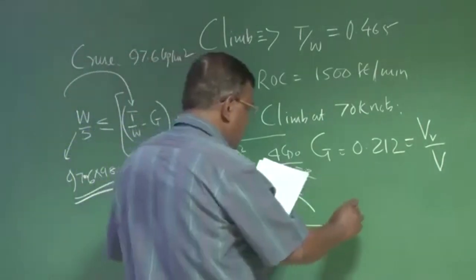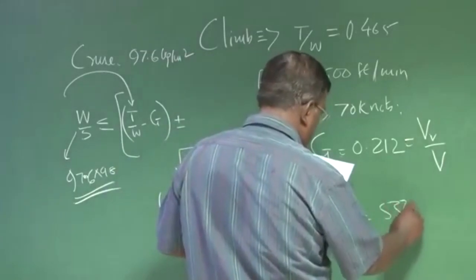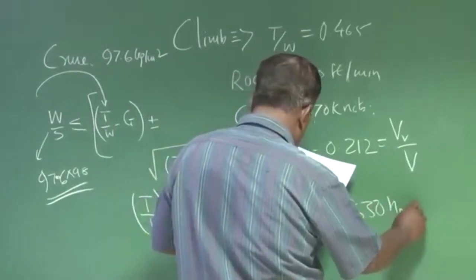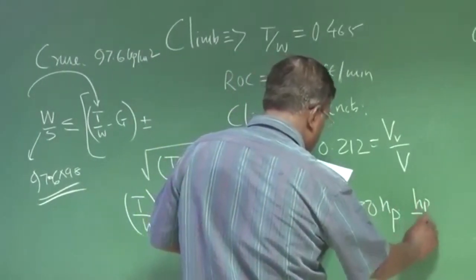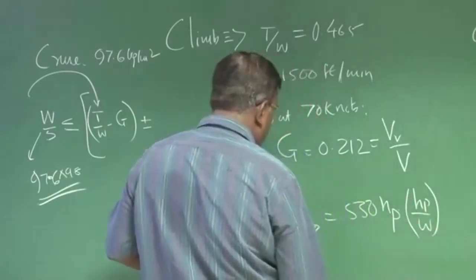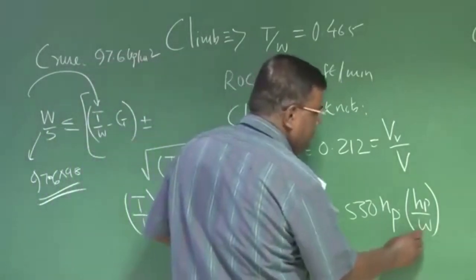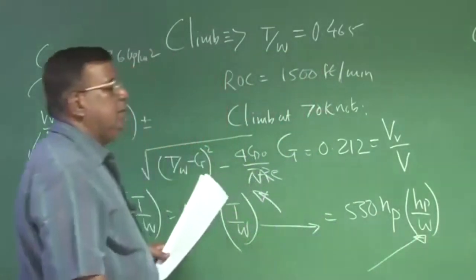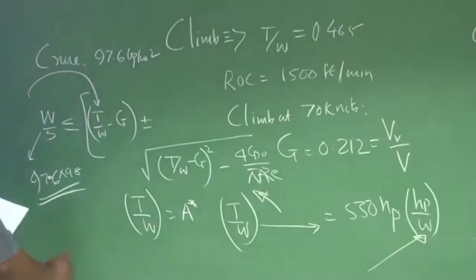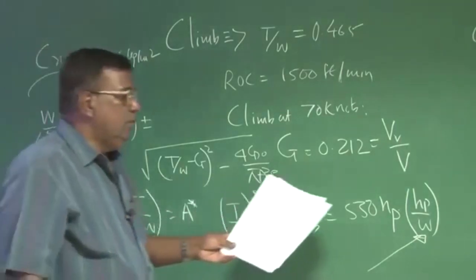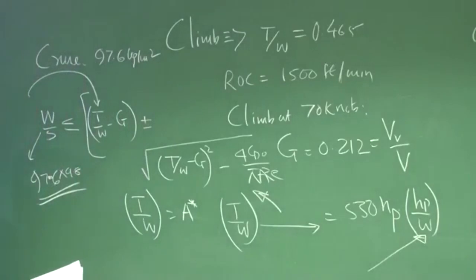So this T by W, I now check back with 550 into Eta P into HP by W, and see what is the HP by W required, or what is the inverse of power loading required, whether I am able to get from that engine or not. So this sort of iteration will go on.